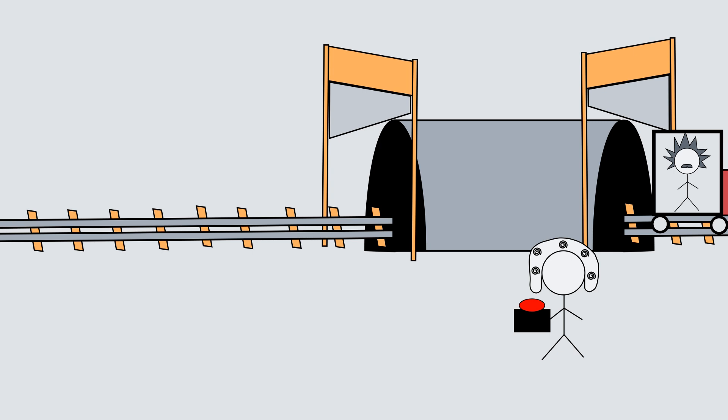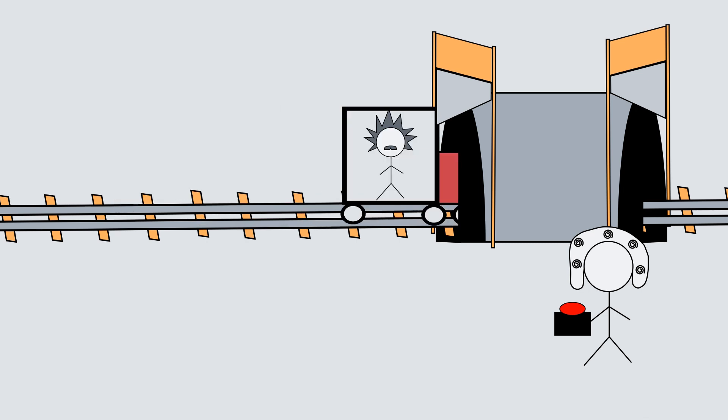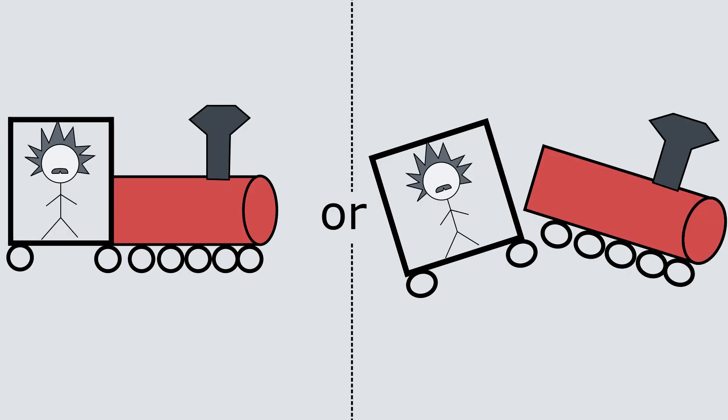Now, in Albert's frame, not only is the tunnel shorter, but the train is longer. This spells disaster. When the train goes through the tunnel and the guillotines come down, they'll no longer miss the train and it will get cut up. But how can the train be chopped up in one reference frame and completely fine in another?